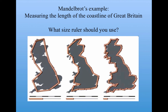Mandelbrot's most famous example is the notion of measuring the length of a coastline. He particularly looked at the coastline of Great Britain because of its ruggedness. His question was: suppose we want to measure its length — what size ruler should we use? If we measure it with a rather long ruler, we get a certain number of lengths. But if we shrink the ruler, we actually get a longer coastline.